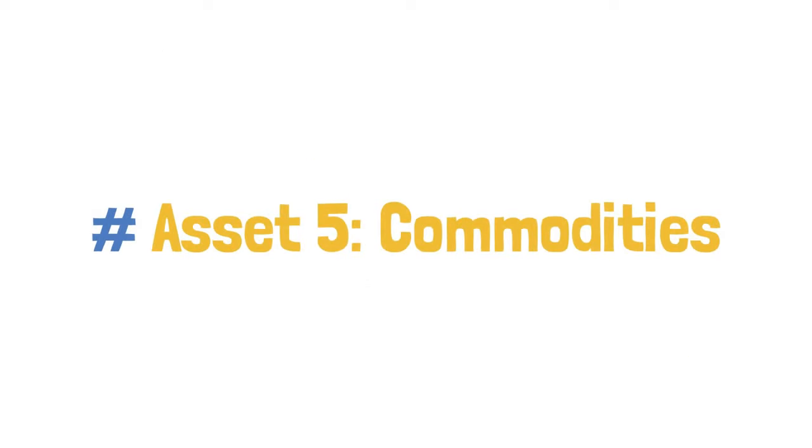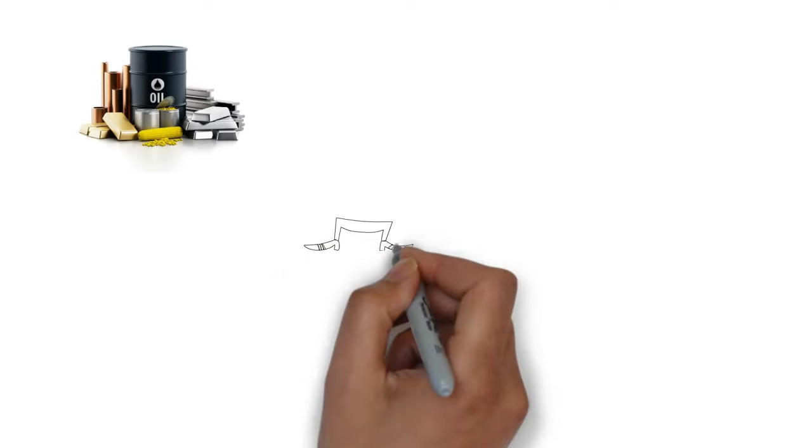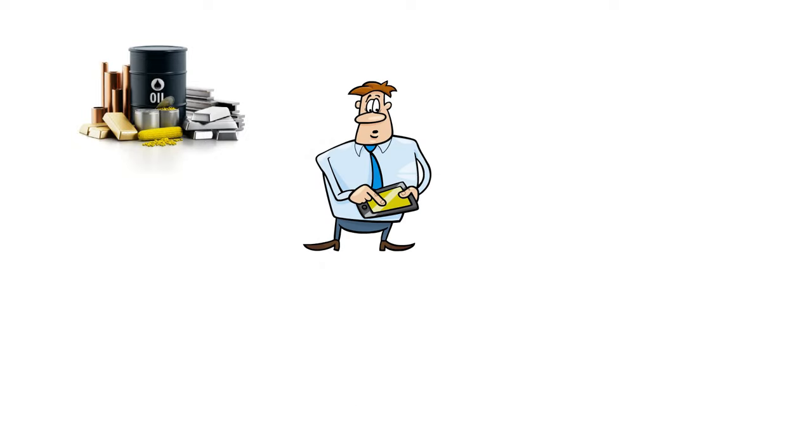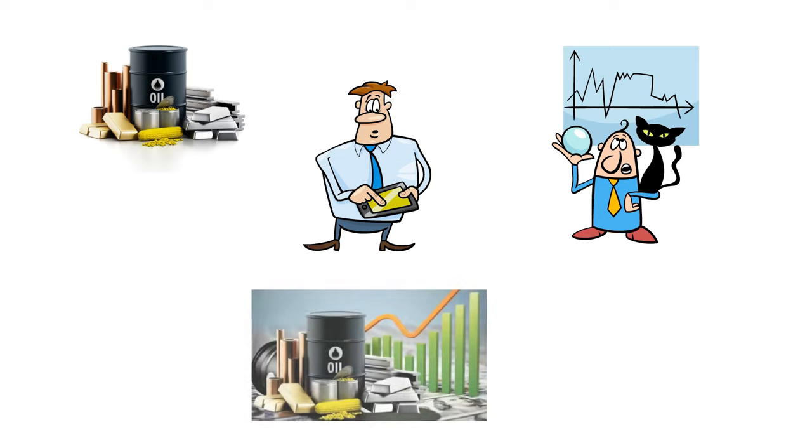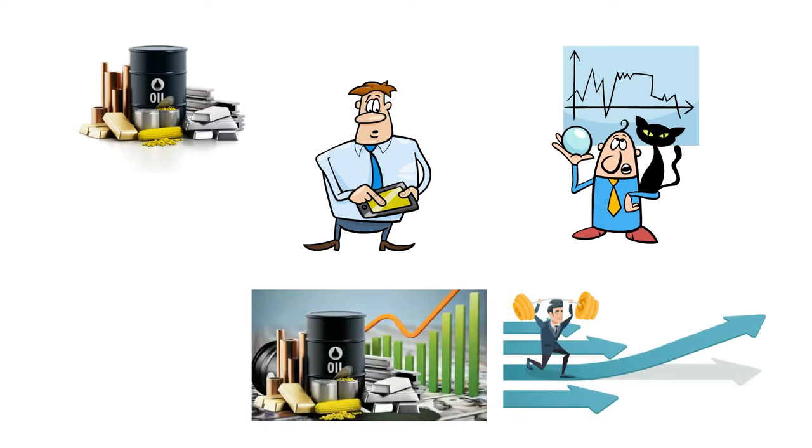Asset 5: Commodities. Commodities include tangible assets like crude oil, cotton, and gold. They are essential for everyday life and crucial to the global economy. Investing in commodities can provide a hedge against inflation and a way to diversify your portfolio.